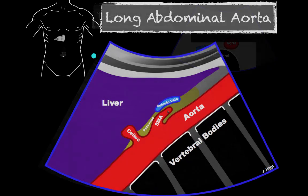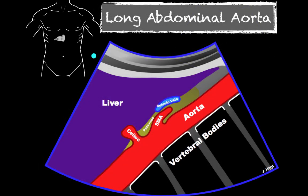After looking in the transverse view, I like to go back and look with a long view of the abdominal aorta. This allows me to look a little more proximal and up into the chest — I've caught some descending thoracic aortic aneurysms doing this. You're going to angle up into the chest a little, which gives this sloped appearance. You'll see vertebral bodies in the posterior with shadowing behind them, and your aorta will lay right on top. Probe marker toward the head, midline just slightly left — paramedial. You'll see the celiac trunk come off and the SMA, and you're also looking for saccular aneurysms that can get missed instead of the fusiform aneurysms you typically find in the transverse view.